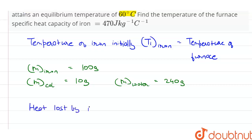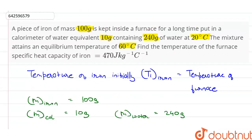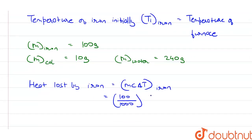So heat lost by iron is equal to mc delta t for iron. The mass of iron is 100 grams, so in kilograms it will be 100 upon 1000 kilograms. The heat capacity of iron is 470 joules per kilogram per degree Celsius.